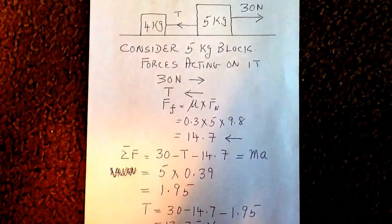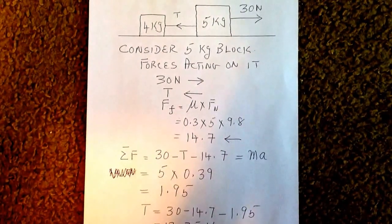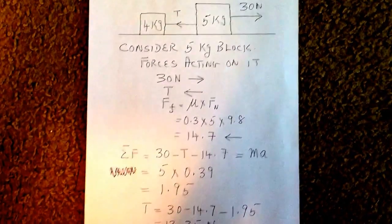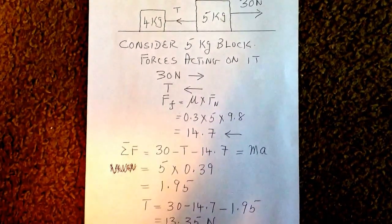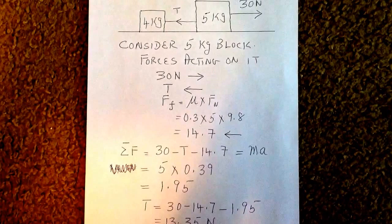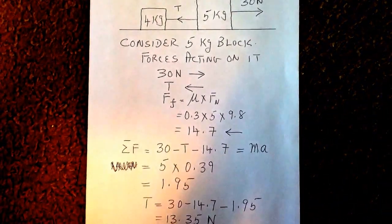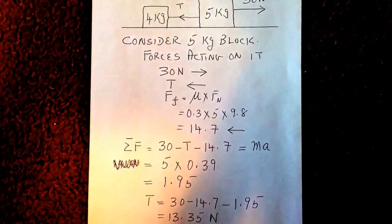The friction force in this case is mu times the normal force. Mu is 0.3 and the normal force for the 5-kilogram block is 5 times 9.8. So we get the friction force to be 14.7 newtons.